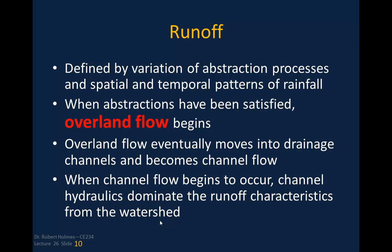Runoff is defined by the variation of abstraction processes and spatial and temporal patterns of rainfall. Abstractions include initial abstraction — rain being caught by leaves, potholes on your driveway, and in fields — as well as abstraction due to infiltration and evapotranspiration. When all abstractions have been satisfied — infiltration, initial abstraction, and evapotranspiration — overland flow begins. This overland flow eventually moves into drainage channels and becomes channel flow, moving from upland areas and hill slopes into an organized channel.